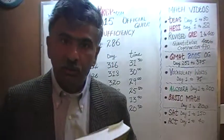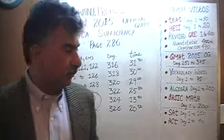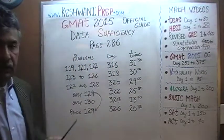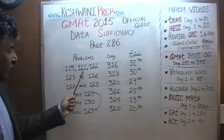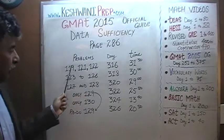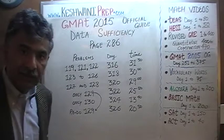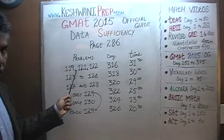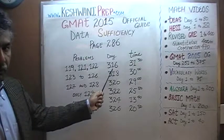Today we will look at all the data sufficiency problems appearing on page number 286. On page 286, you will find problem number 119, 121, and 122 — solutions to those three problems were presented on day number 316. Problem number 120 was done on day number 314.